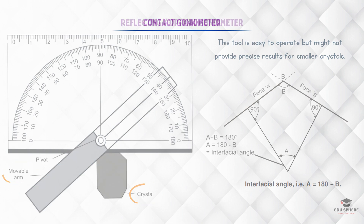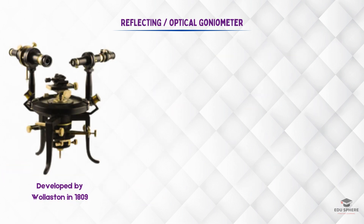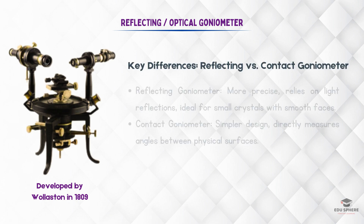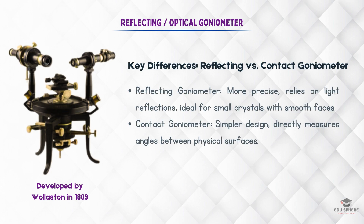Next is the reflecting goniometer, also known as an optical goniometer. This instrument is better suited for measuring interfacial angles of smaller crystals. Developed by Wollaston in 1809, it has since been significantly modified and improved. Reflecting goniometers are used for more precise measurements.